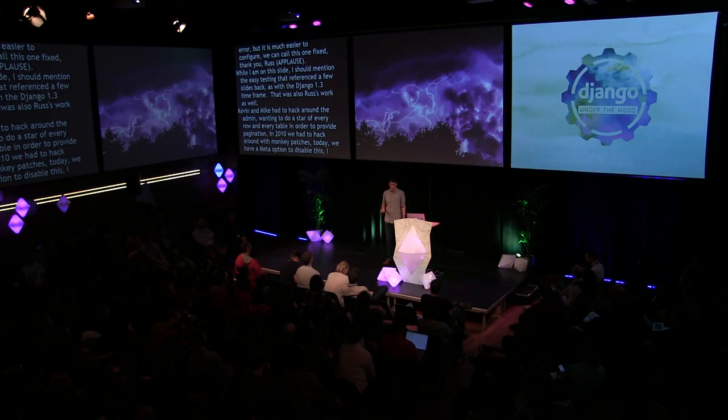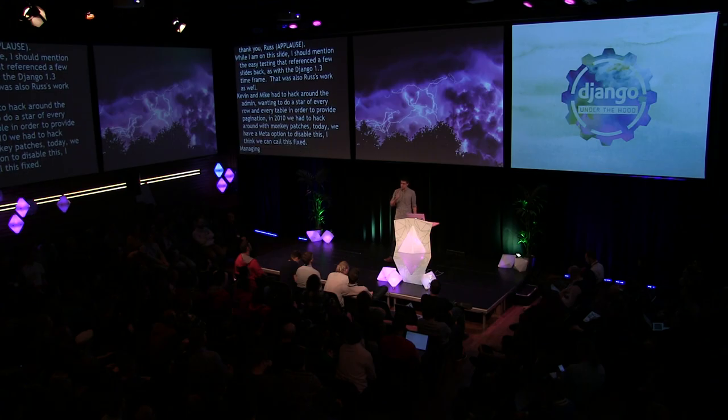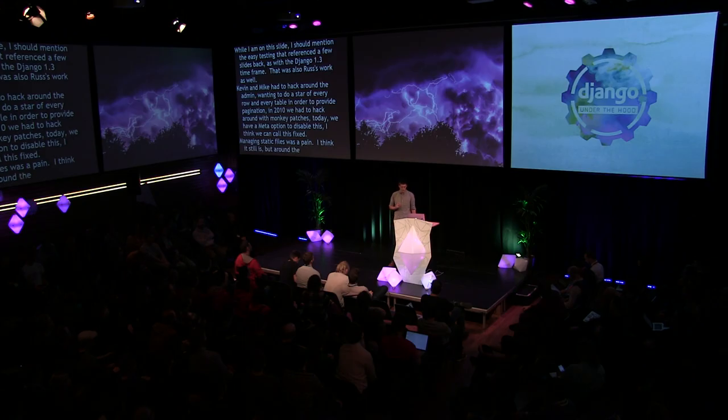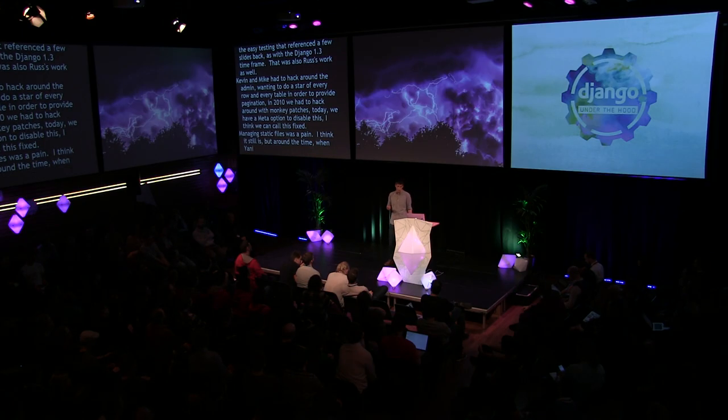Like many of us, Kevin and Mike had to hack around the admin, which wanted to do a COUNT(*) of every row in a very large table in order to provide pagination. In 2010, they had to hack around this with monkey patches. Today, in Django 1.8, we now have a meta option to disable this, so I think we can call this fixed. Managing static files was a pain — Yanis contributed contrib.staticfiles to Django, which improved the situation quite a lot.